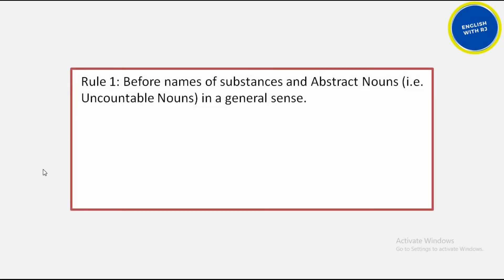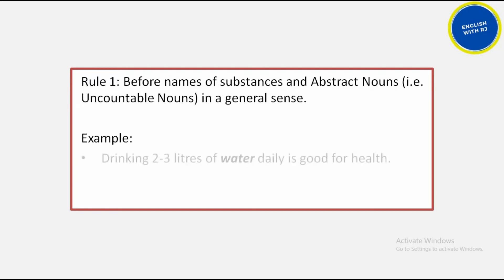There are some rules that we will keep in mind, and if we do, there will never be any problem with article omission. First of all, when we see abstract nouns or material nouns — that is, uncountable nouns — in a general sense, we will never use articles. Let's see some examples and understand.